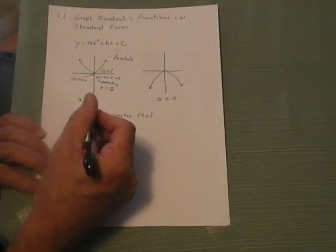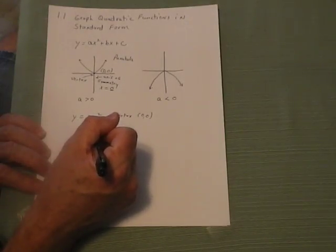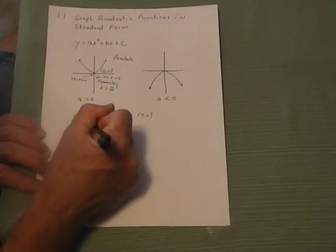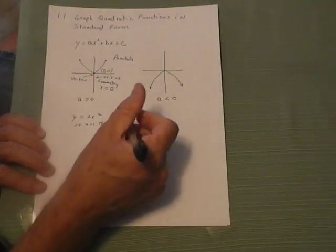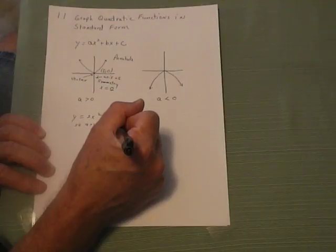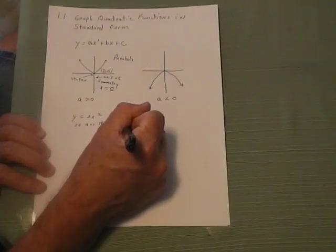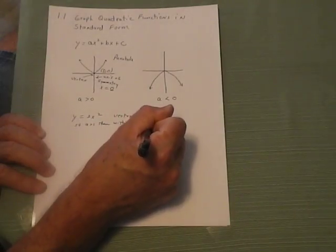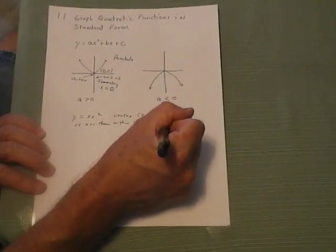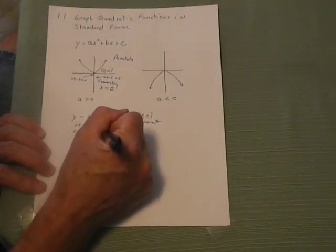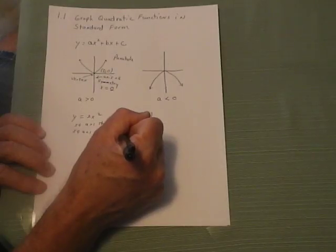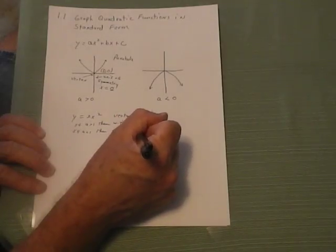If the a value is greater than 1, the parabola will be within the parent. If a is less than 1, like a fraction, then the parabola will be outside the parent.